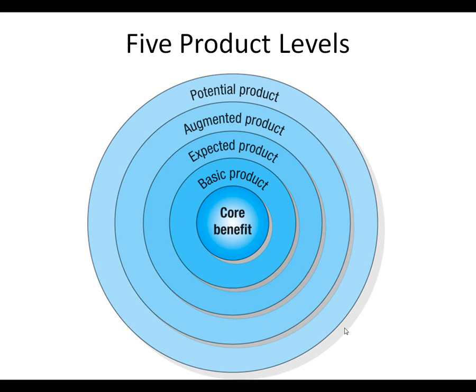Within each product, we have five product levels. You have the core benefit, which is the basic what it provides. For a car, the core benefit is transportation. That benefit is satisfied by the basic product, the expected product, the augmented product, and the potential product.